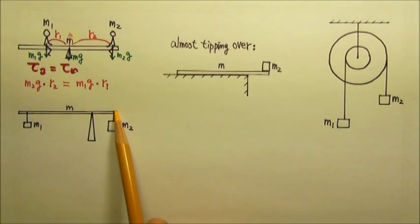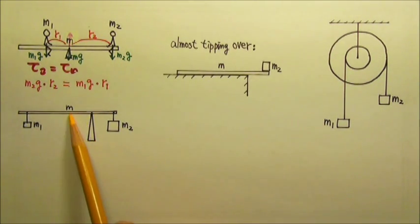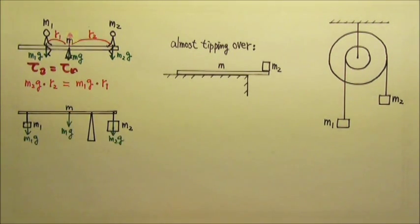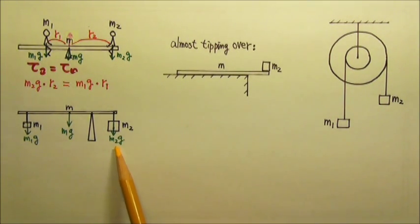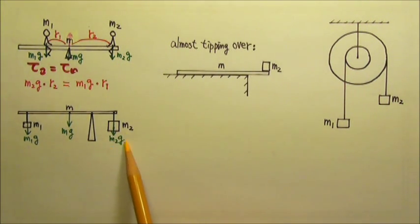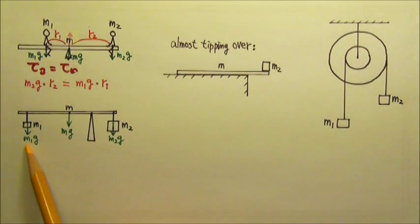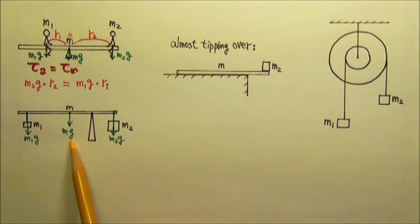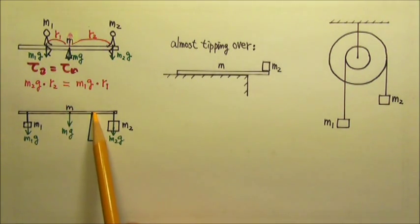If we have a uniform beam but the fulcrum does not go through the center of the beam, then the mg of the beam would produce torque. So in this case, we have three mg's producing torque. The clockwise torque is produced by M2g — the force times the lever arm. The counterclockwise torque is the mg of the beam times its lever arm plus M1g times its lever arm.